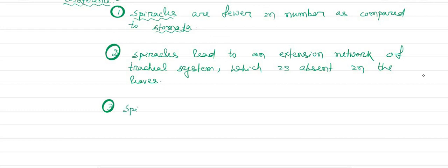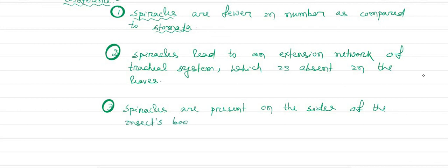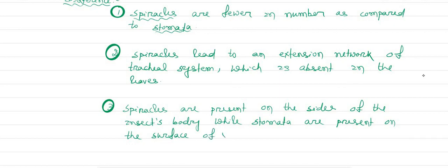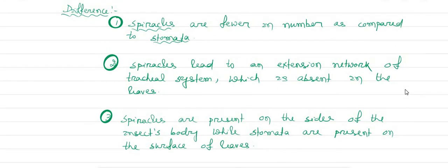The third difference is: spiracles are present on the sides of the insect's body, while stomata are present on the surface of the leaf.